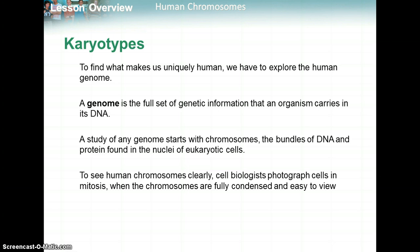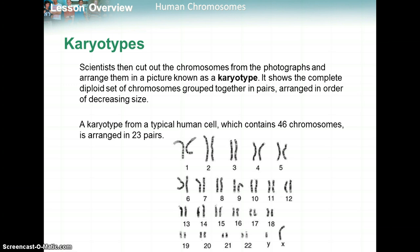A study of any genome starts with looking at chromosomes — when your DNA is bundled up and condensed, found in the nucleus. To see human chromosomes clearly, cell biologists will photograph cells in mitosis because that's when your chromosomes are condensed and easy to see. Scientists then cut the chromosomes from the photographs and arranged them in a picture known as a karyotype, which shows the complete diploid set of chromosomes grouped together in pairs, arranged in order of decreasing size.